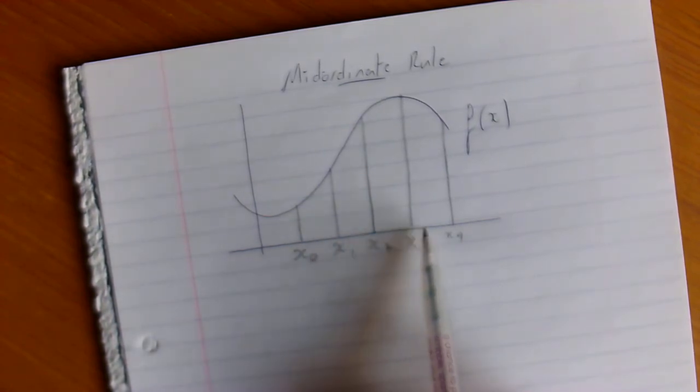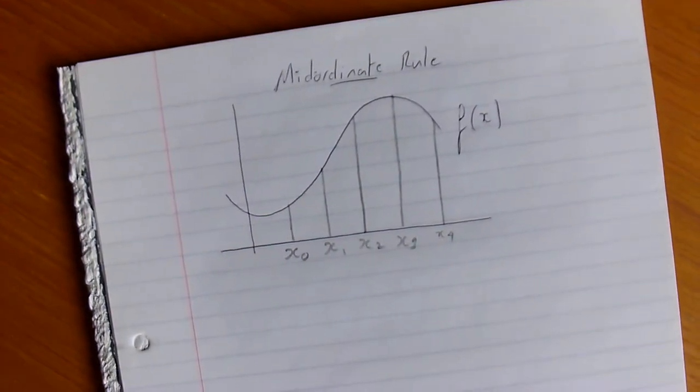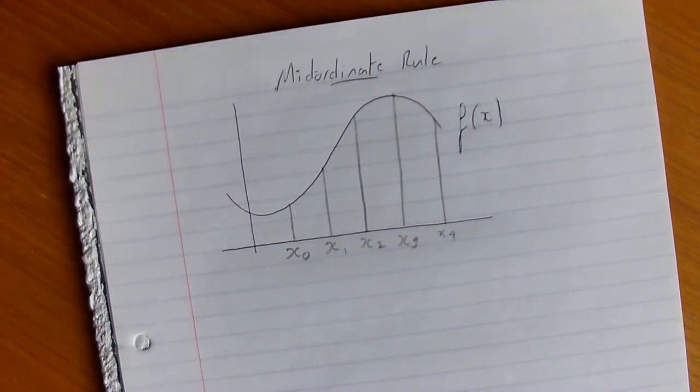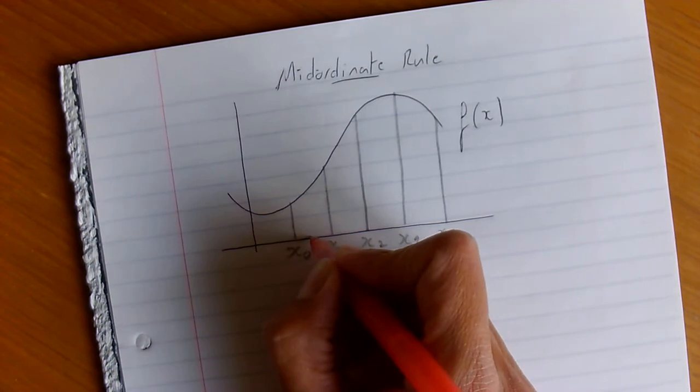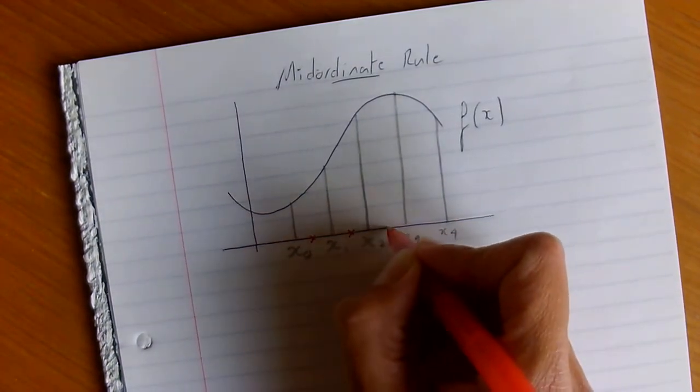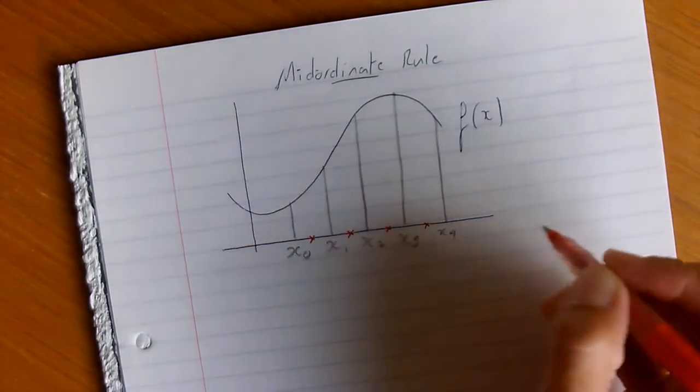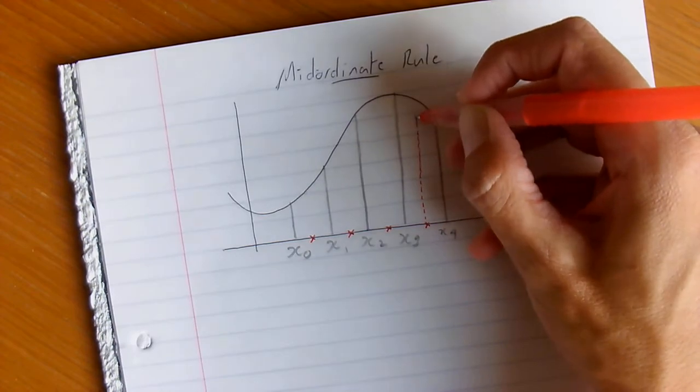And this is exactly the same length. And what happens is that the mid-ordinate rule, well, the clue is in the title, mid-ordinate. So we are actually looking at halfway between each ordinate, like so. And you go up to the actual curve itself.